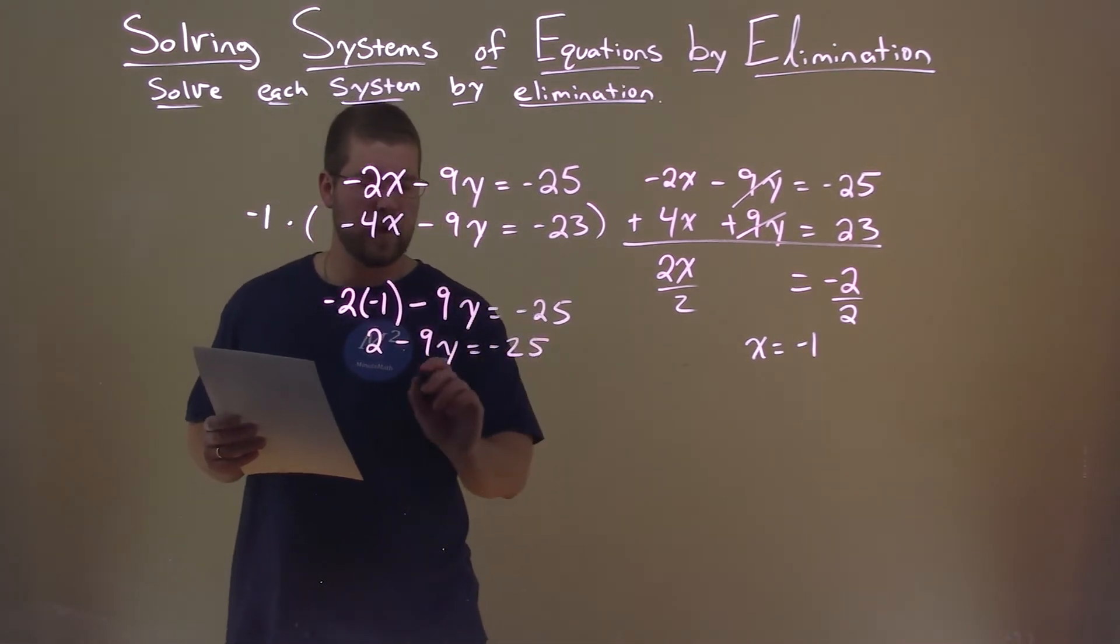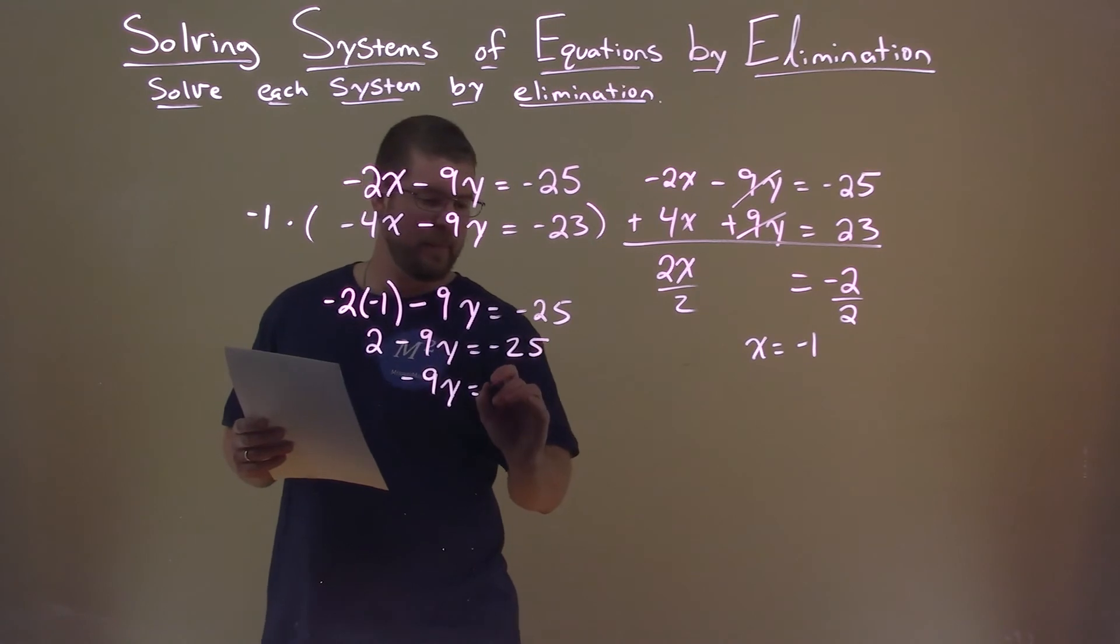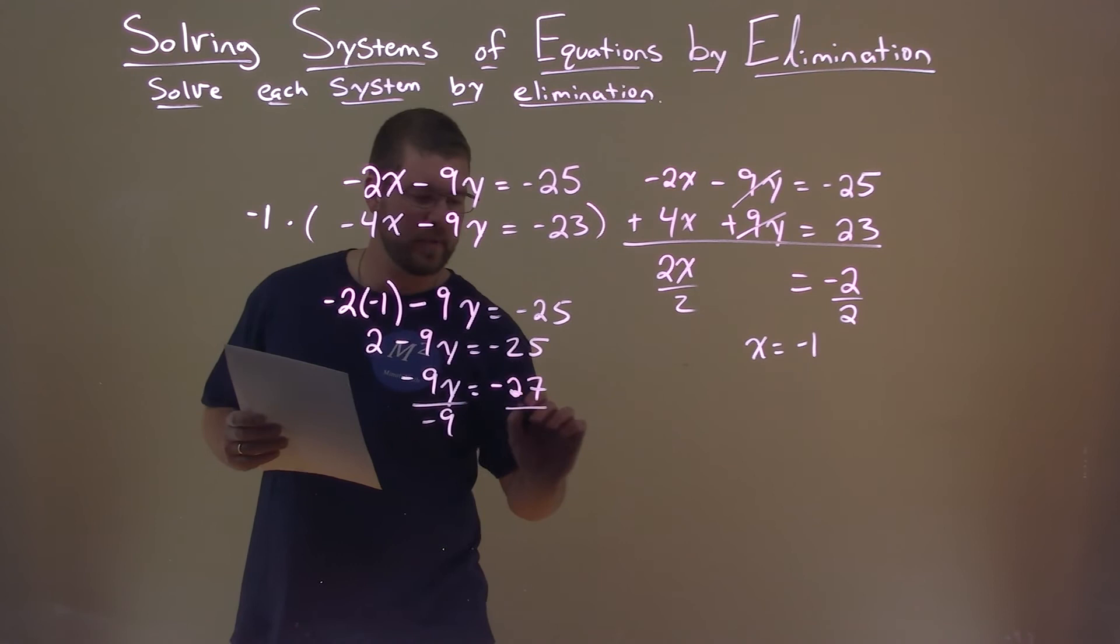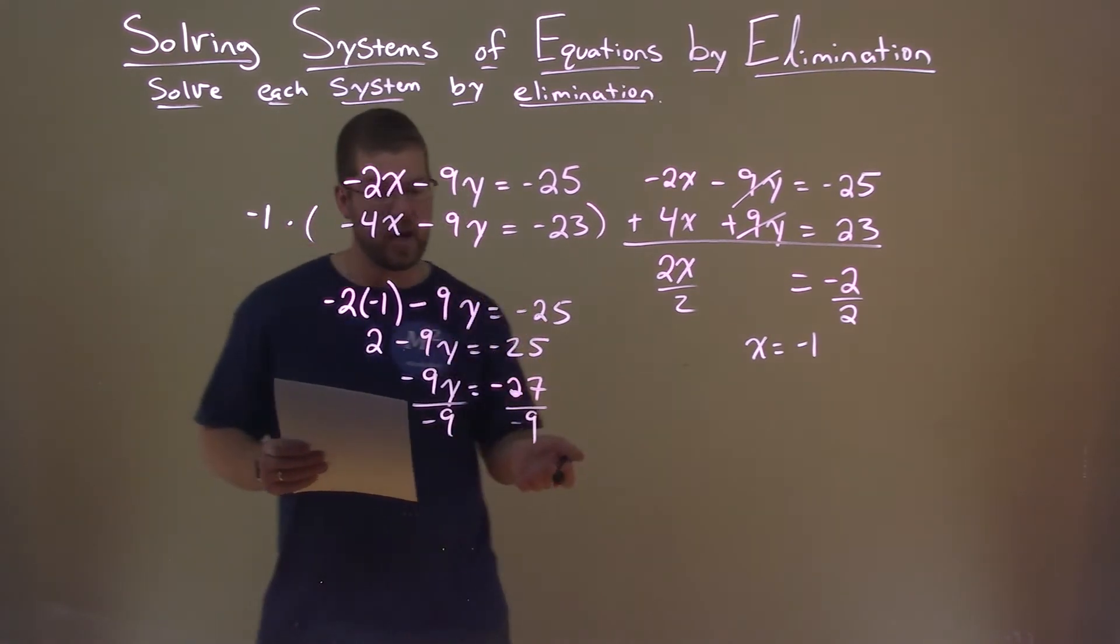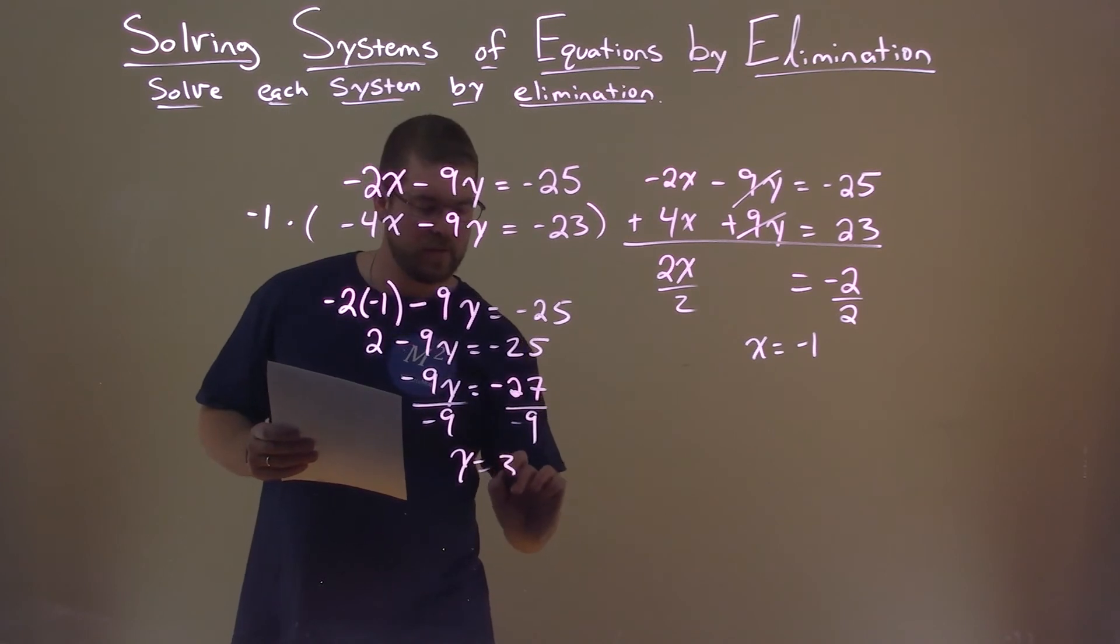Subtract 2 from both sides. Negative 9y equals, well, negative 25 minus this 2 is negative 27. Divide both sides by negative 9, and negative 27 divided by negative 9, two negatives make a positive, y becomes positive 3.